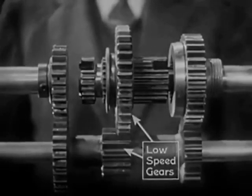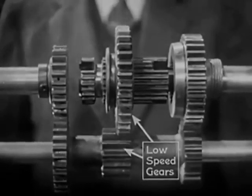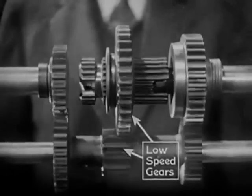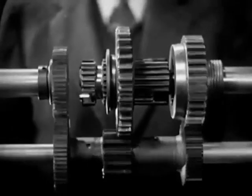So, in low speed, we get the greatest leverage by letting the smallest gear on the counter shaft turn the largest gear on the drive shaft.